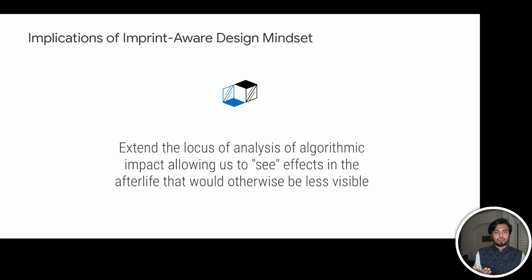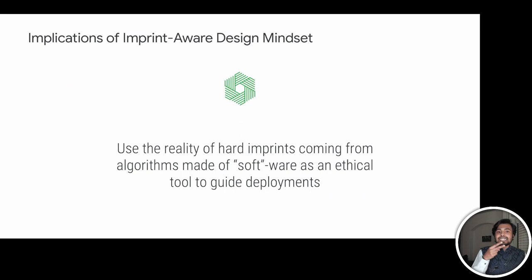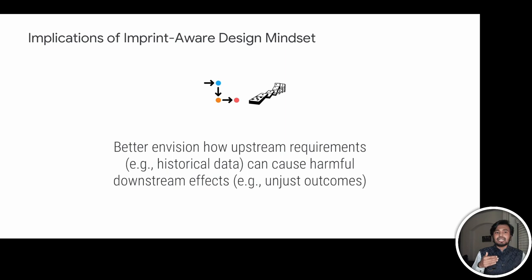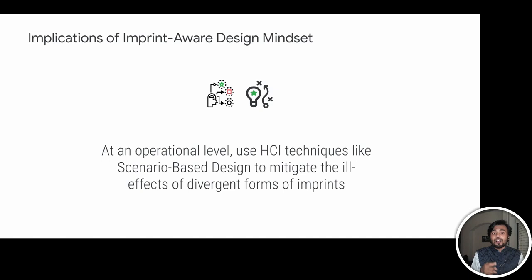With these insights in mind, let's look at some implications — four that we want to share. First, the concept of the imprint helps us reframe how we think about algorithmic impact, extending the locus of analysis and affording us to see effects that would otherwise be less visible in the afterlife due to the absence of the algorithm. Second, we can use the reality of hard imprints from algorithms to ethically guide deployments — for example, what would have happened if Ofqual's algorithm developers were aware of the disproportionate impact their decisions would have on people on the other side of the world? Third, imprint awareness can allow us to better envision how upstream requirements such as historical data can cause harmful downstream impacts like unjust outcomes. Fourth, at a practical level, teams can enact this mindset through HCI techniques like scenario-based design to think through and mitigate the ill effects of different kinds of imprints.